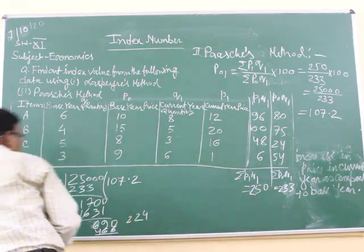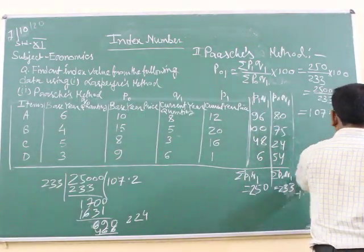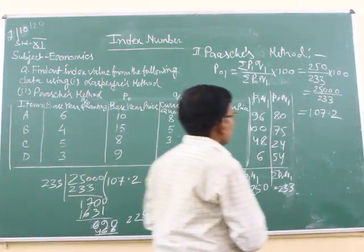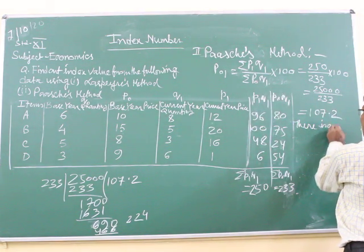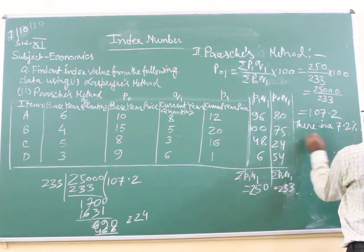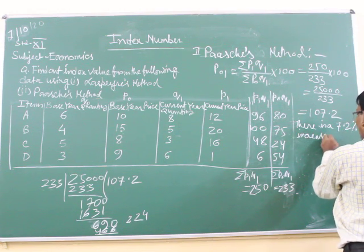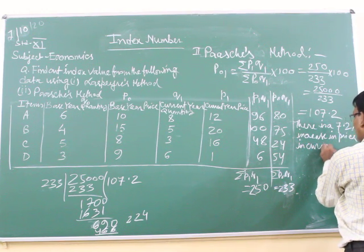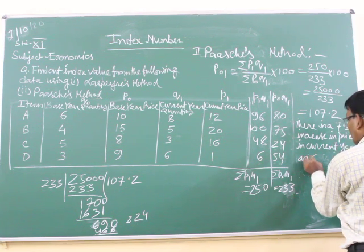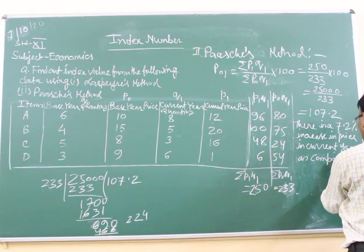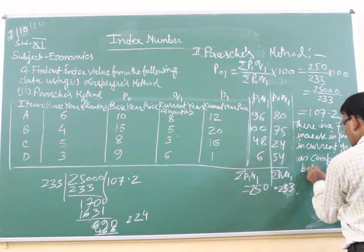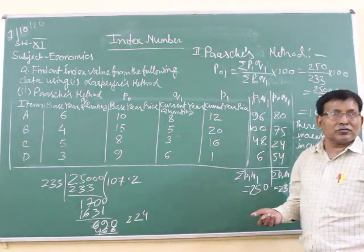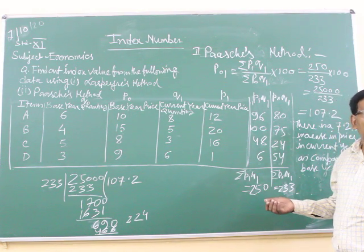Which conclusion we draw here? There is an increase in the price of 7.2%. So there is a 7.2 percent increase in price in current year as compared to base year. Thank you students.